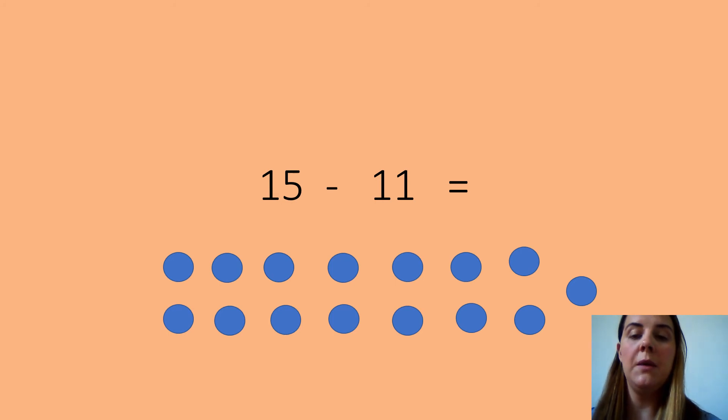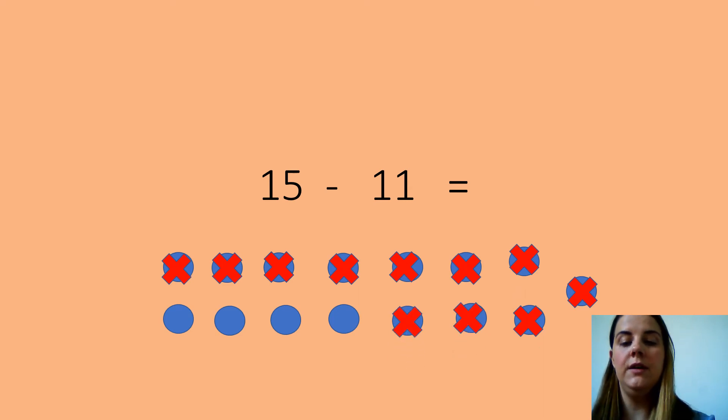Okay, and how many are we crossing out? Well done, 11. So 1, 2, 3, 4, 5, 6, 7, 8, 9, 10, 11. And how many do we have left? Well done, 1, 2, 3, 4. Your answer is 4. Fantastic. Write down your number sentence.